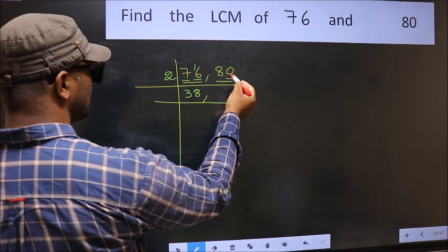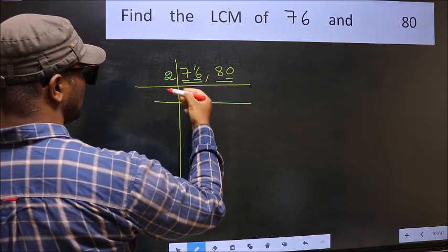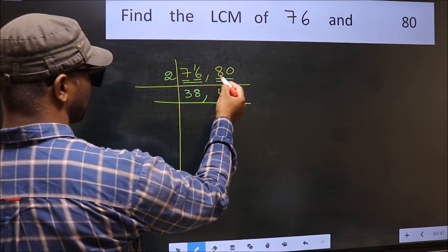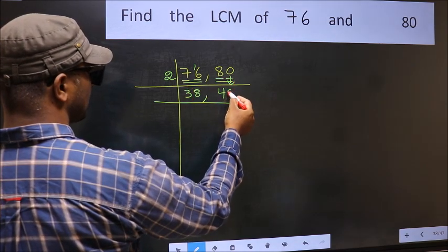The other number 80. Last digit 0, so this is divisible by 2. First number 8. When do we get 8 in the 2 table? 2 times 4 is 8. The other number 0 as it is down.